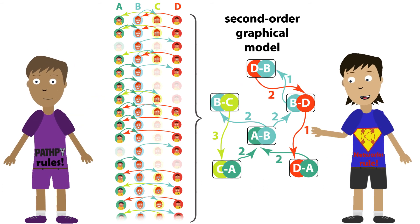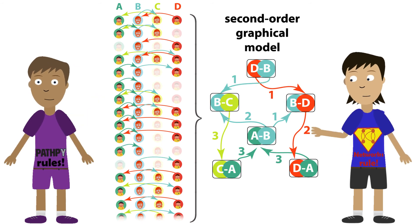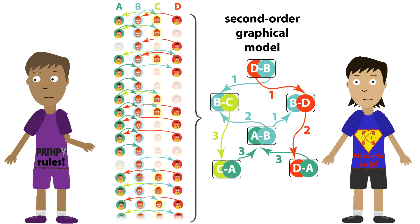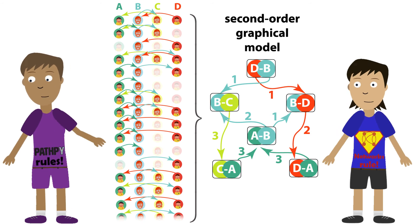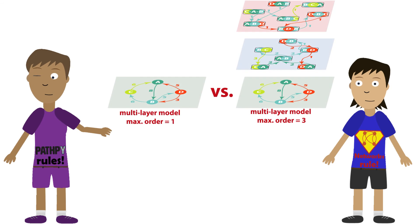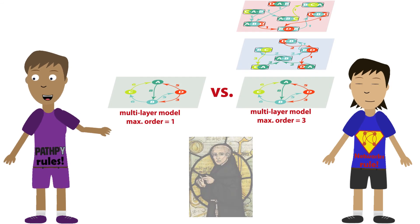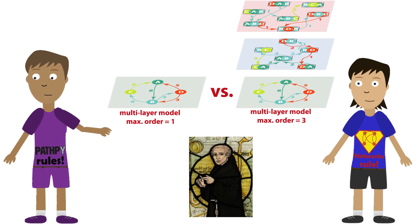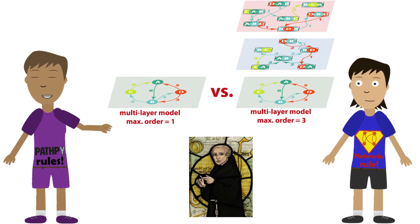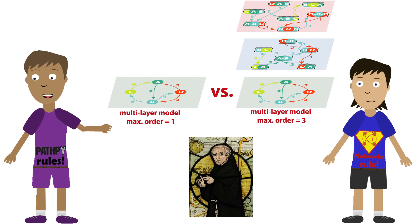Wait a minute. That's trivial. A more complex model clearly explains the data better. You're right. That's why we need model selection and a bit of philosophy. The idea goes back to William of Ockham, who argued that we should favor models that make the fewest assumptions. This is called Ockham's razor, and we can incorporate it by using statistical tests that account for the complexity of our model.